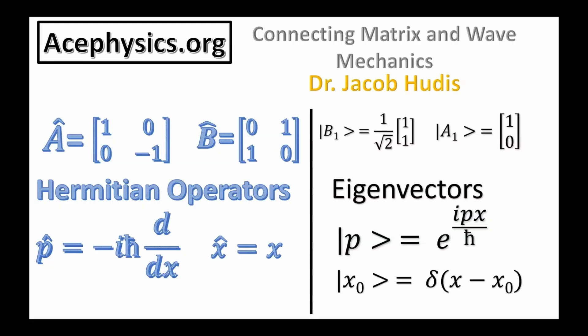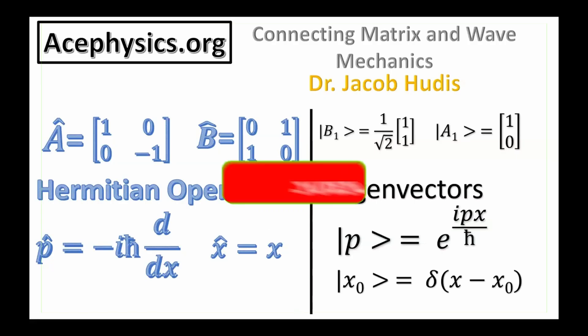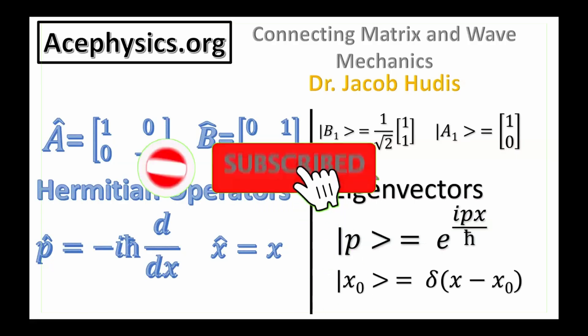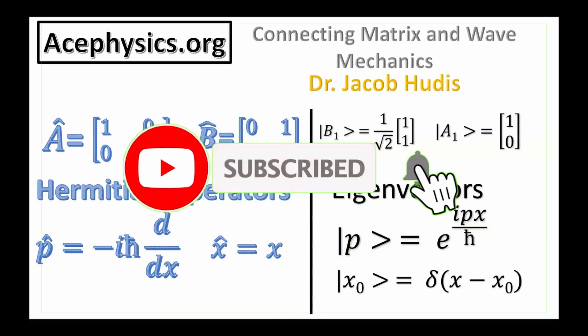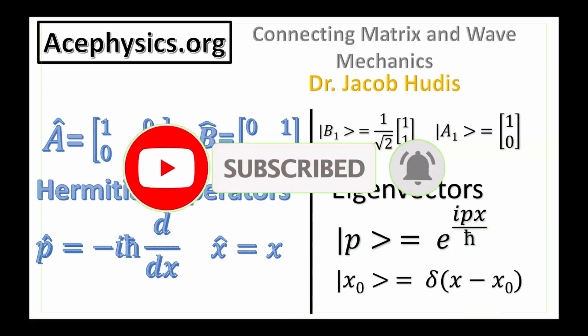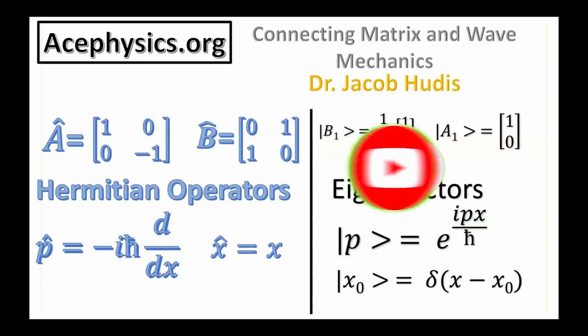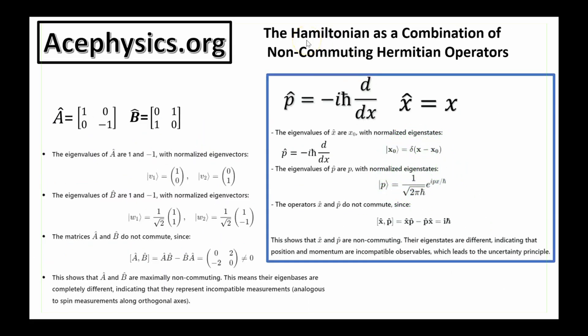Both formulations explain quantum mechanics through non-commuting observables and uncertainty relations. Please like and subscribe to my channel if you're interested in physics and math-related content, quantum mechanics, and AP College physics problem-solving.